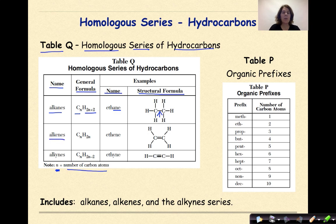Alkenes have the general formula CnH2n. Ethene — we know 'eth' means two carbons — but this -ENE ending tells me I'm going to have a double bond between the two carbons. And finally, alkynes have a general formula of CnH2n-2. We're going to look for that -YNE ending to indicate a triple bond between the two carbons.